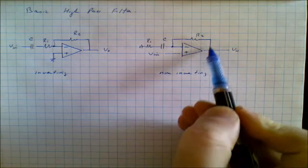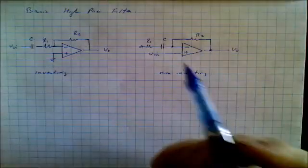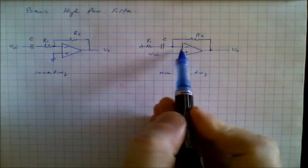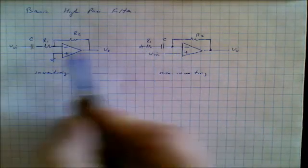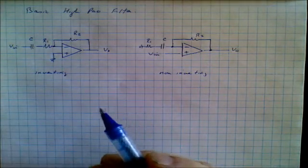Notice that they both have a feedback resistor which goes from the output to the inverting input, and they both have an RC network in the inverting input, in one case to ground, another to the input. So how do these circuits work?